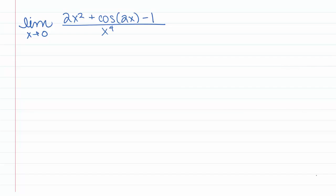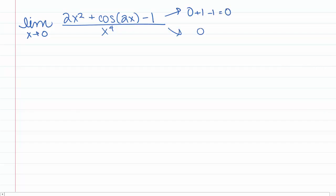We're going to see how Taylor series can help us solve some problems that we've seen previously that might have been more difficult to solve. Let's start by looking at the limit as x goes to 0 of (2x² + cos(2x) - 1) / x⁴. Note that if we plug in 0, the top goes to 0 + 1 - 1 = 0, and the bottom goes to 0. So we have a 0/0 indeterminate form. Now we could do L'Hôpital's rule, but let's instead look at the Taylor series for cos(2x).